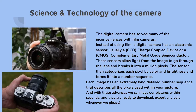Now we have digital cameras, and the digital camera has solved many of the inconveniences of film cameras. Instead of using film, a digital camera has an electronic sensor, usually a CCD or a CMOS. These sensors allow light from the image to go through the lens and break it into millions of pixels. The sensor then categorizes each pixel by color and brightness and forms it into a number sequence, so each image has an extremely long, detailed number sequence. With all these advances, we can have our pictures within seconds, ready to download, export, and edit whenever we please.